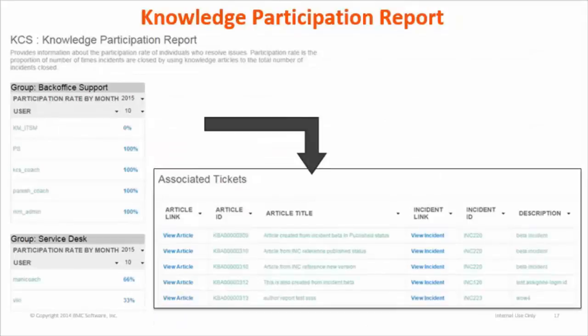The next report is the Knowledge Participation report. This report displays the participation rate of users such as service desk agents in resolving incident tickets using knowledge articles. The participation rate is calculated as the proportion of the number of times incident tickets are closed by using knowledge articles to the total number of incidents closed. To view the associated ticket details, click on the participation rate of the respective user.